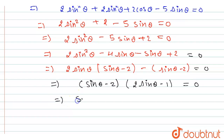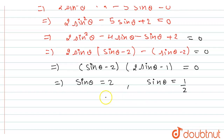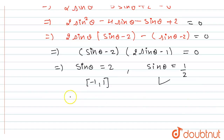From the factored form, sinθ = 2 or sinθ = 1/2. Since the range of sinθ is [−1, 1], sinθ = 2 is not possible. Therefore, sinθ = 1/2.